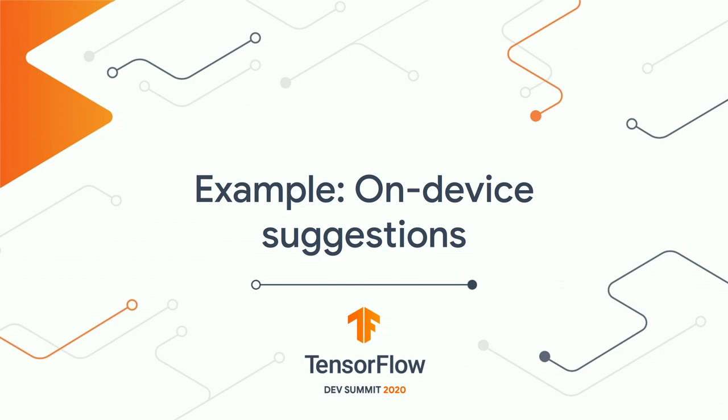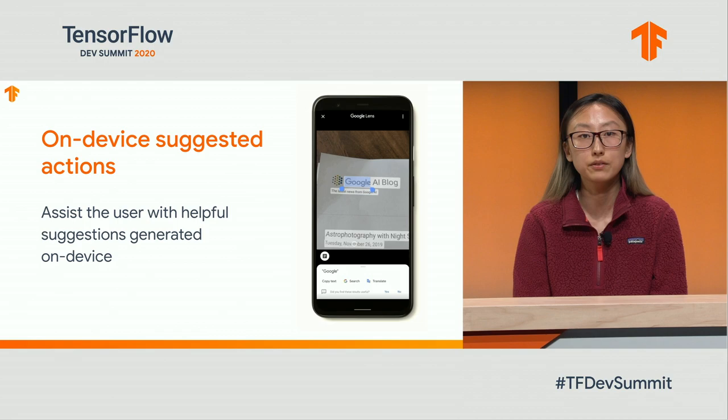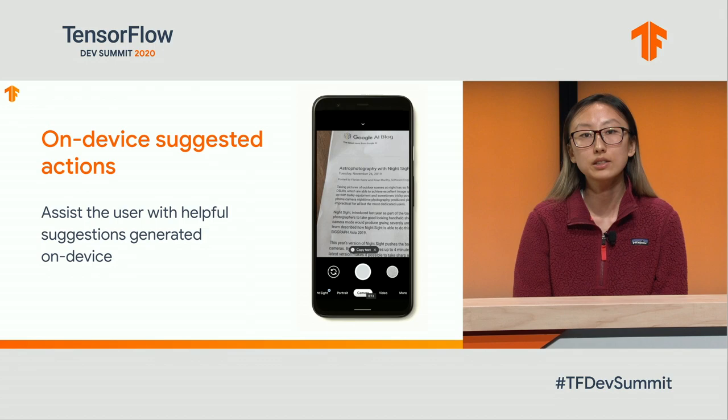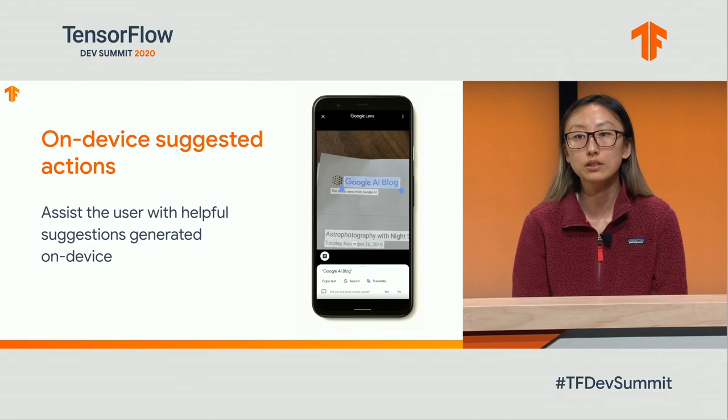Let's look at an example of how Lens uses on-device computer vision to bring helpful suggestions instantly to the user. We can use on-device ML in order to determine if the user's camera is pointed at something that Lens can help with. You can see here in this video that when the user points at a block of text, a suggestion chip is shown. When pressed, it brings the user to Lens, which then allows them to select the text and use it to search the web.